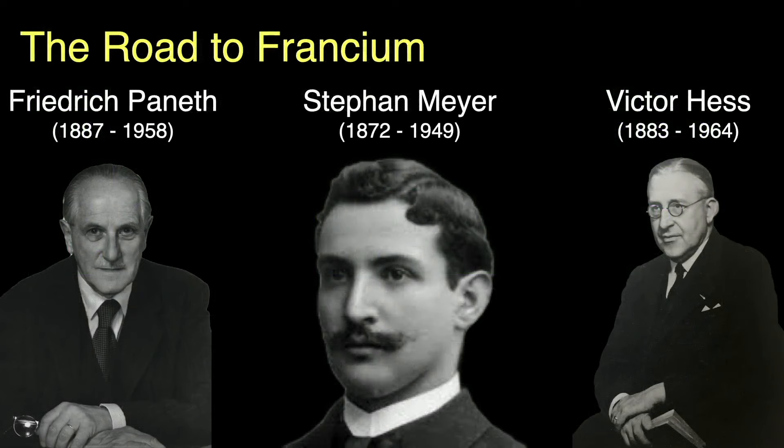In 1914, Friedrich Paneth, Stephan Meyer, and Victor Hess investigated alpha radiation from several elements, including actinium. Unfortunately, World War I interfered with their research, and their data was not accurate enough for them to declare discovery of element 87, though they were probably seeing decays from francium.